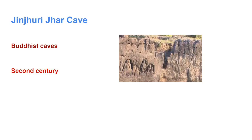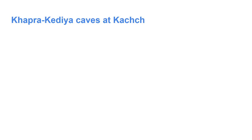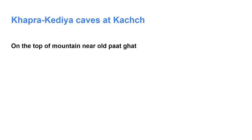The next one is Khaprakirya caves at Kutch. Earlier in the video we talked about Khaprakirya caves at Junagadh, but these caves are located at Kutch. They are situated on the top of the mountain near Ol Patghad in Lakhpat Taluka of Kutch. There are 2 caves, discovered by K.K. Shastri in 1967.